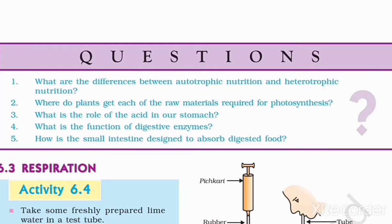You have to write this down. Where do plants get each of the raw materials required for photosynthesis? Plants get raw materials like carbon dioxide and water, and in the presence of sunlight and chlorophyll, they prepare the food.